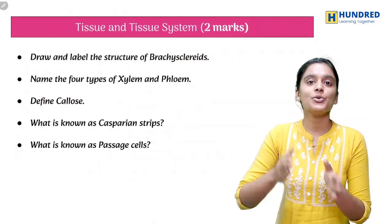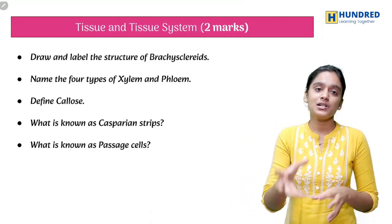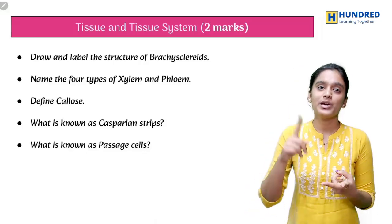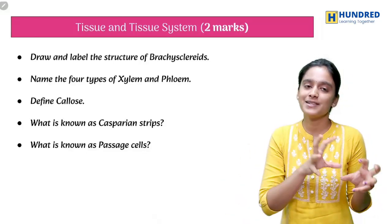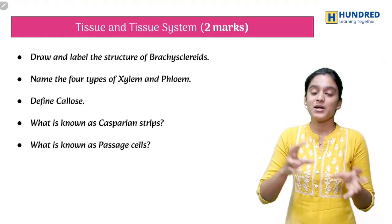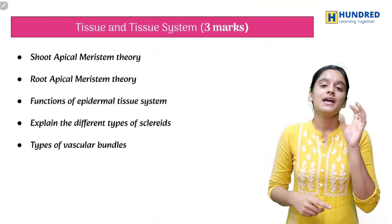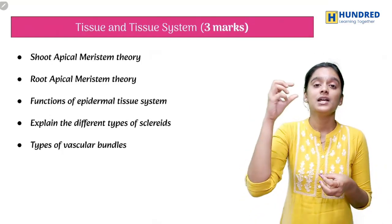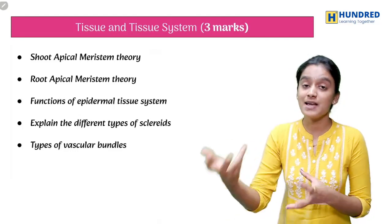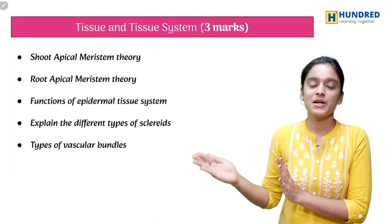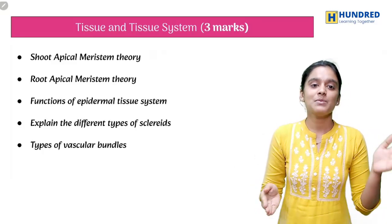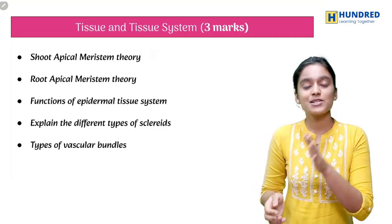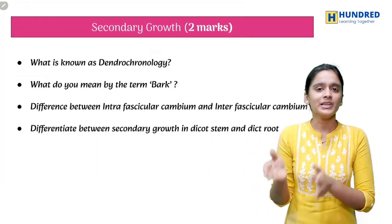This is Botany Chapter 9, Tissue and Tissue System. Important 2-mark topics are: Brachysclereids diagram, the 4 types of xylem and phloem components, define callus, what is known as Casparian Strips, and what is known as Passage Cells. For 3 marks: shoot apical meristem theory and root apical meristem theory — each can be expected for 2 or 3 marks, and under 5 marks: Functions of Epidermal Tissue System, different types of sclereids, and types of vascular bundles.